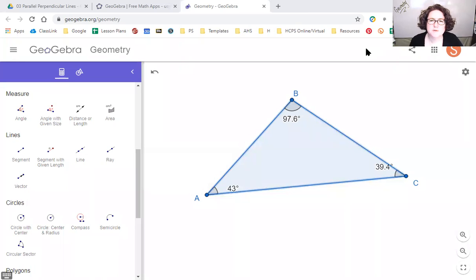In today's topic, we are going to do something called ordering sides and angles in triangles. In other words, we're going to determine, given information about sides, what do we know about the angles, and vice versa. If we're given information about the angles, what do we know about the sides?